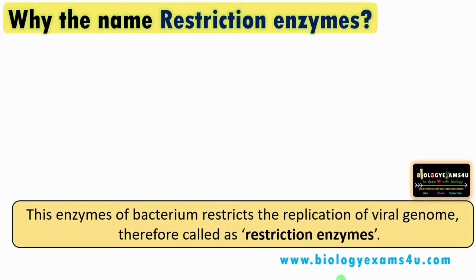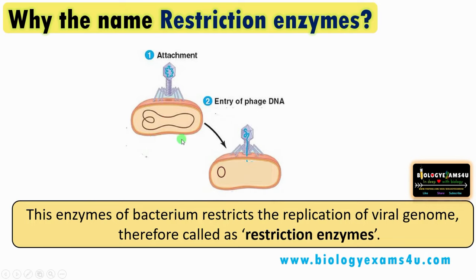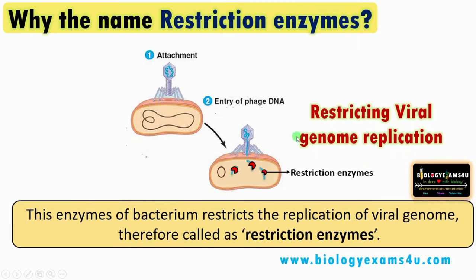Let's begin with why this enzyme is called a restriction enzyme. A bacteriophage — a virus that attacks bacteria — upon attachment injects its genetic material into the bacterium. Bacteria have a defense mechanism in the form of an enzyme called restriction enzyme that cuts this viral genome, making it inactive. As this enzyme restricts the replication of the viral genome inside the bacterium, it is called a restriction enzyme. Bacteria's own DNA is protected from this enzyme by specific methylation.